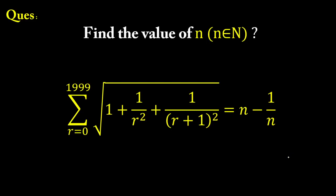Hello everyone. Today we are going to solve an interesting problem based on telescopic series. The problem is: find the value of n, where n belongs to the natural numbers. The general term of the series is root over 1 plus 1 upon r squared plus 1 upon (r+1) squared, and the summation varies from r equal to 0 to 1999. The series sum equals n minus 1 upon n, and we have to find this natural number n.